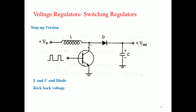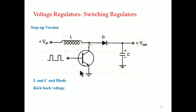The step-up switching regulator uses a transistor with the inductor L introduced in the collector region. The transistor is alternately saturated and cut off. When the transistor is saturated, current flows through the inductor. When it is cut off, the magnetic field around the coil collapses and induces a large voltage across the coil of opposite polarity, keeping the current flowing in the same direction. The inductive kickback voltage is larger than the input voltage — that is why it is called the step-up configuration.